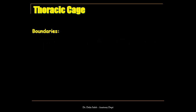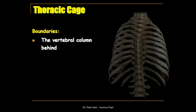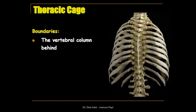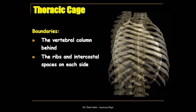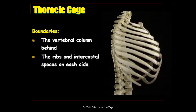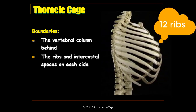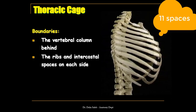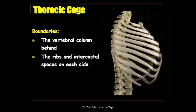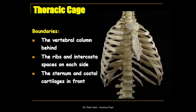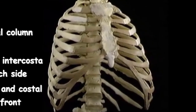The boundaries of the thoracic cage: at the back we have the vertebral column, namely the twelve thoracic vertebrae. At the sides, we have the ribs and the intercostal spaces on each side. Remember that we have twelve ribs on each side and only eleven intercostal spaces. In the front, we have the sternum and the costal cartilages.